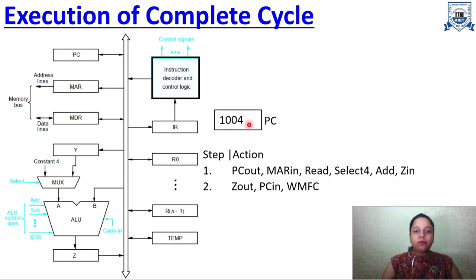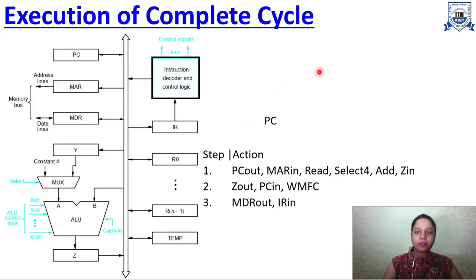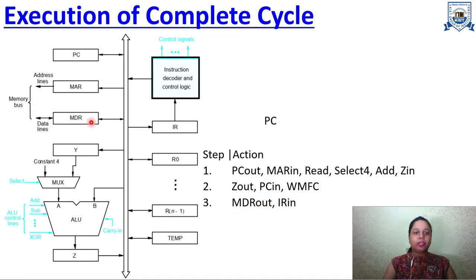Now the new value in PC is 1004. Meanwhile, the content that MDR read from address 1000 is given to IR — the instruction register. So the content that was at the address held by the program counter is now in the instruction register.